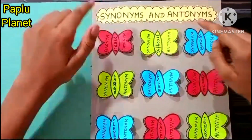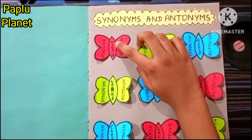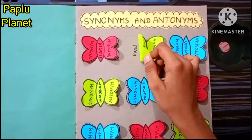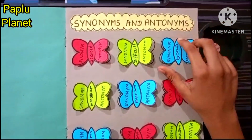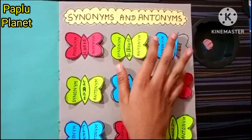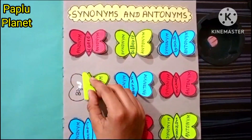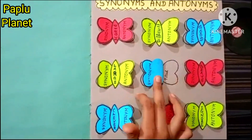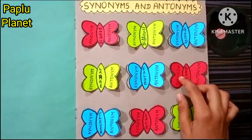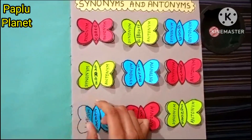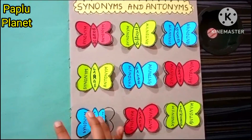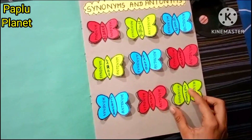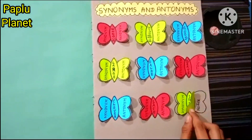Let's come to my other project: synonyms and antonyms. Scared — synonym: afraid, antonym: calm. Difficult — synonym: hard, antonym: easy. Good — synonym: fine, antonym: bad. Large — synonym: big, antonym: small. False — synonym: untrue, antonym: true. Brave — synonym: courageous, antonym: coward. Clever — synonym: intelligent, antonym: stupid. Sorry — synonym: secure, antonym: unsafe. Ignore — synonym: neglect, antonym: notice.